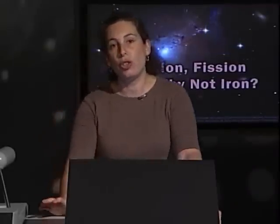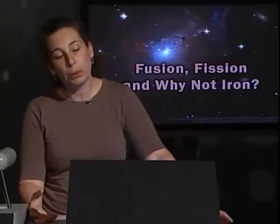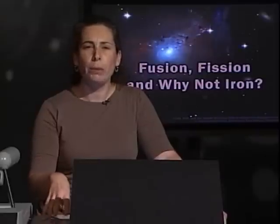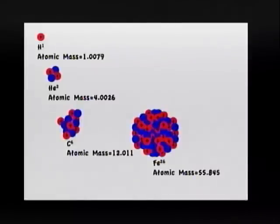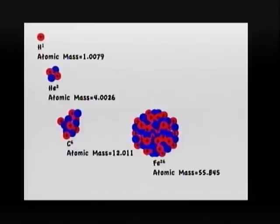Let's think about the structure of an atom again. It's pretty simple to think about the nucleus of an atom. You have two particles — proton and neutron — and the number of protons defines the element. Usually you have the same number of neutrons and protons. An atom of hydrogen has one proton; helium has two protons and two neutrons; carbon has six of each; and iron has 26 protons and 26 neutrons.